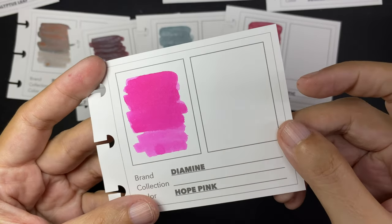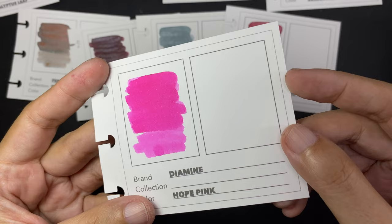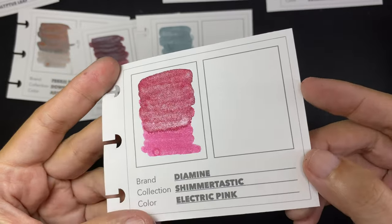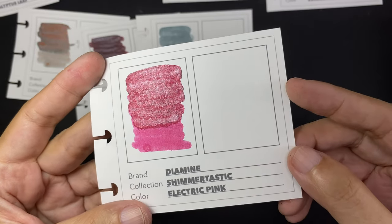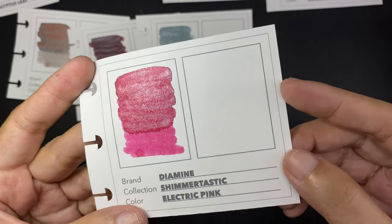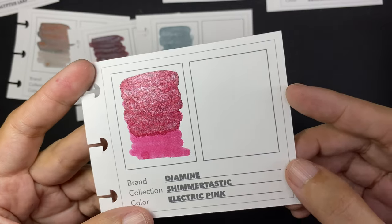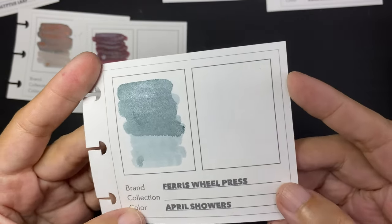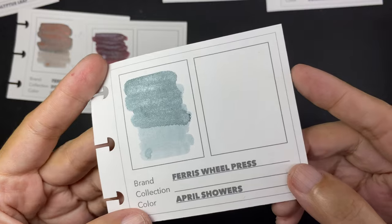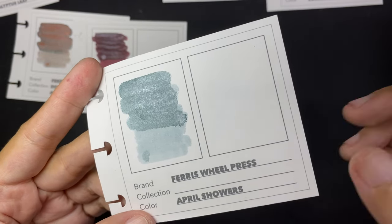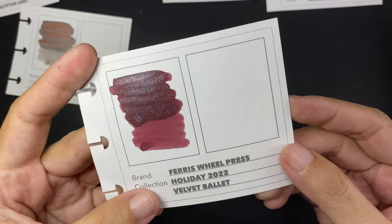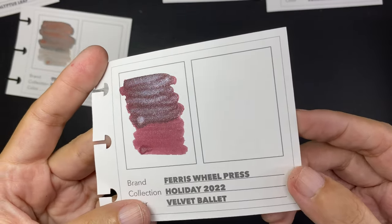This is Hope Pink, a straightforward bright pink. No shimmer. And here is Electric Pink, which is a darker pink with a silver shimmer. An April Shower, which is a light bluish gray with some silver shimmer. And here is Velvet Ballet, a sort of dark red with some shimmer that looks silver to my eyes.